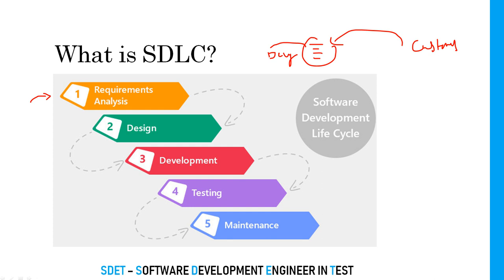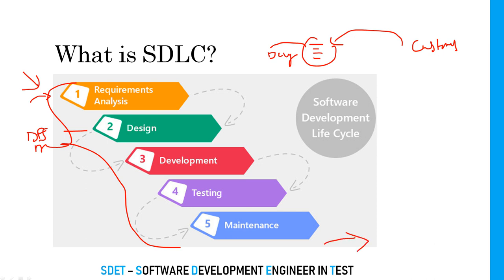Once testing is completed, we certify it and then go to the deployment or maintenance phase. These are the sequence of phases software goes through — starting from requirements, because without requirements from the customer we cannot develop anything. We then design using data flow diagrams and ER diagrams, then develop and code, then test, then maintenance. All of these come under SDLC — Software Development Lifecycle.